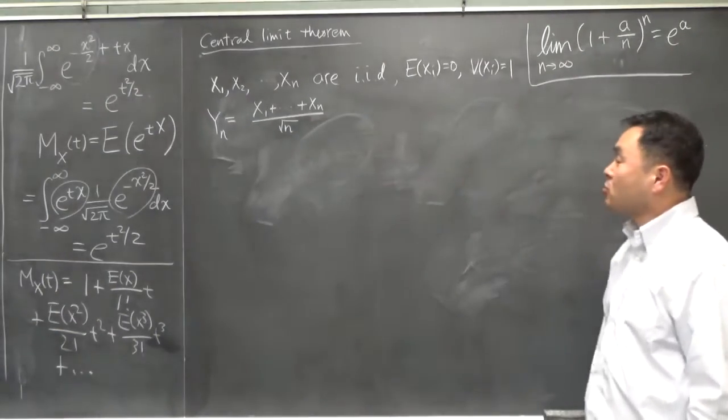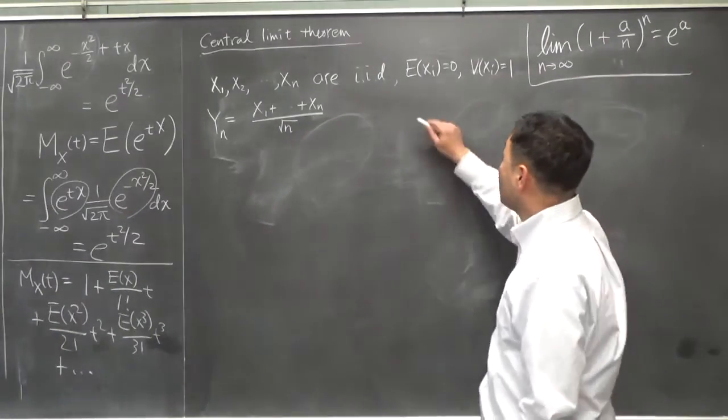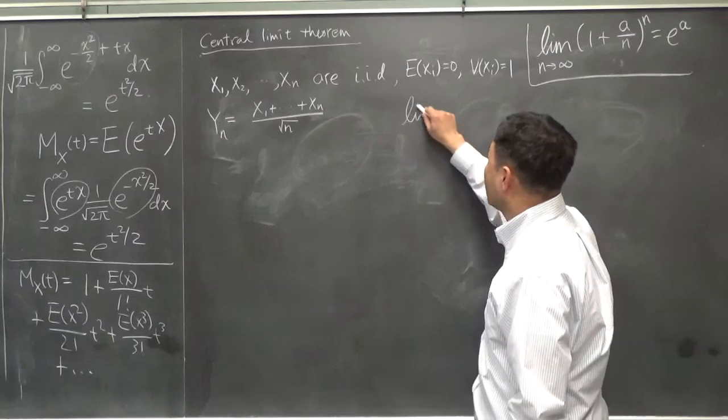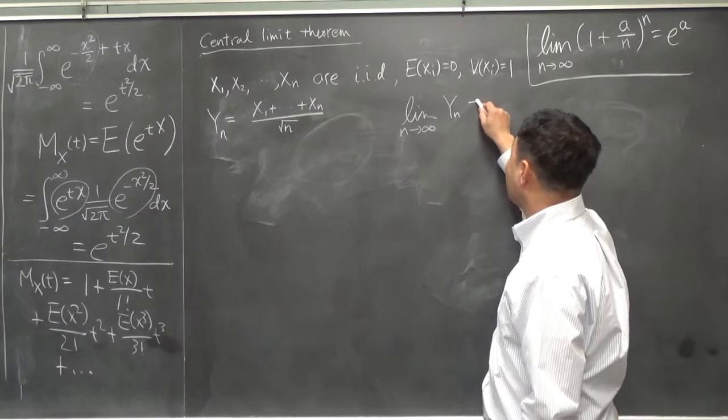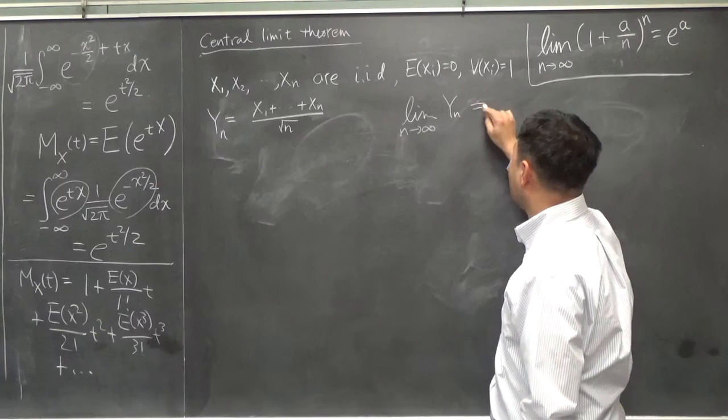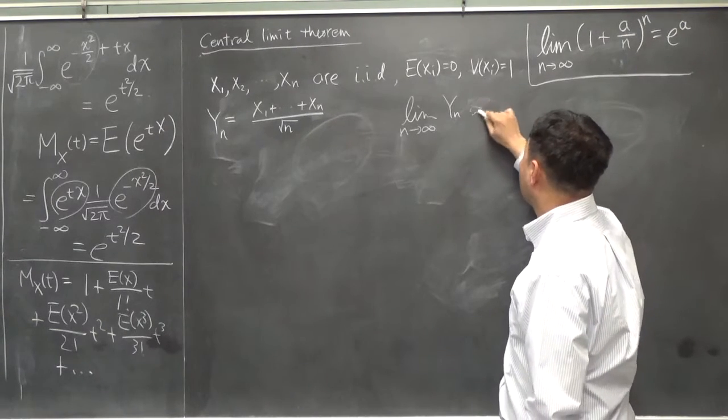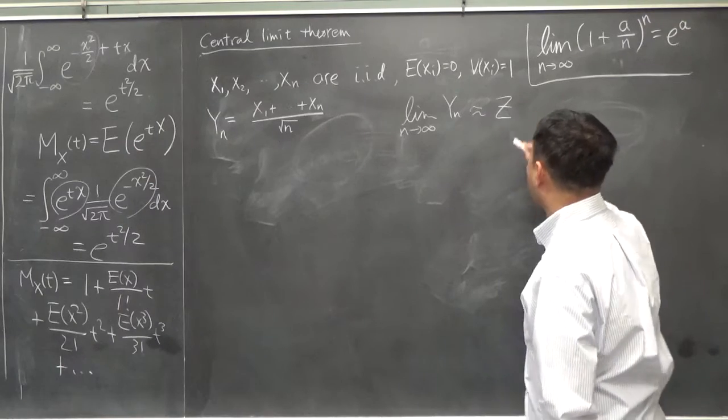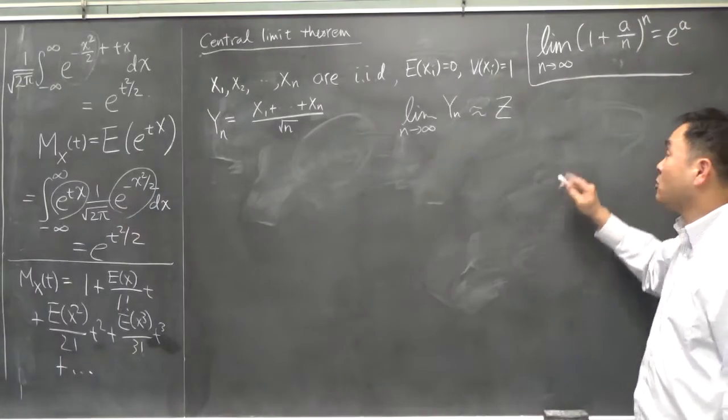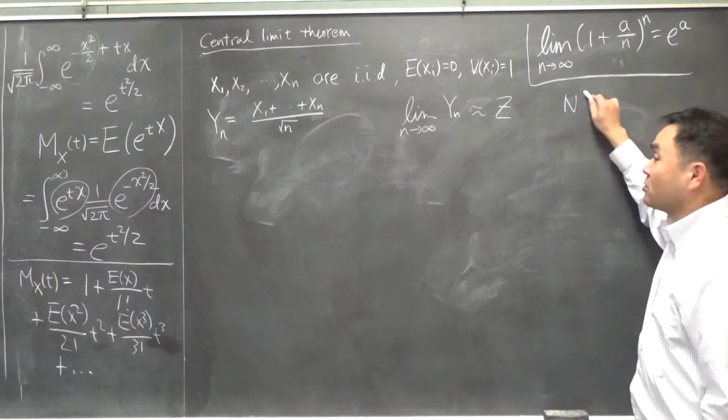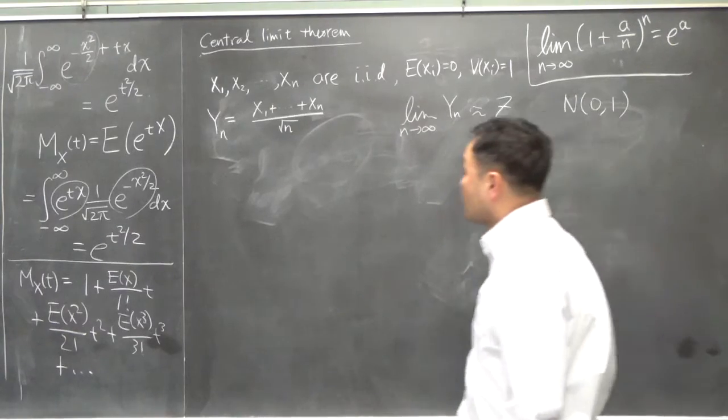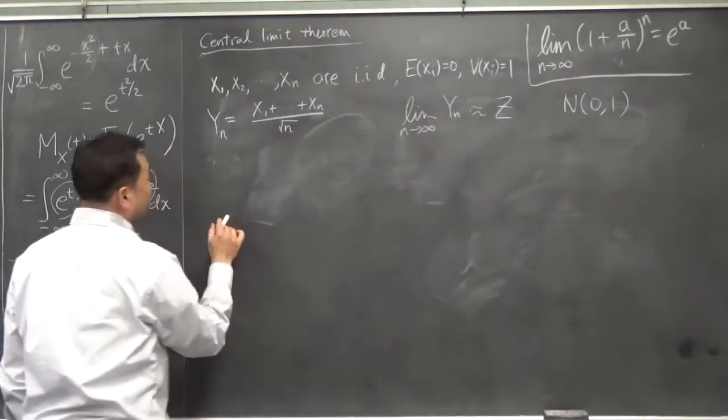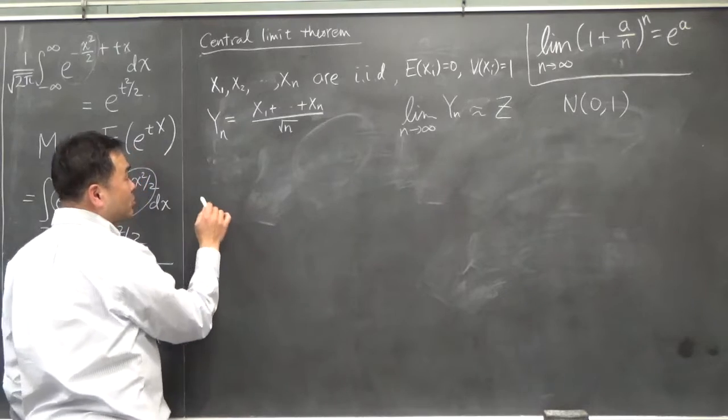So what I want to show is that my claim is that if you take limit as n goes to infinity of Yₙ, this will get closer and closer to this Z, which is a random variable that follows the standard normal distribution. So how do we do that? Well, first of all, we need some properties of the moment-generating function.